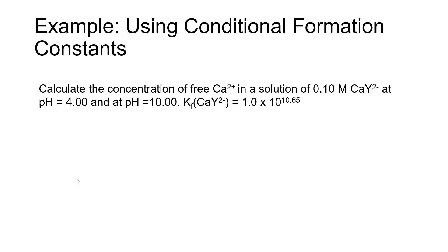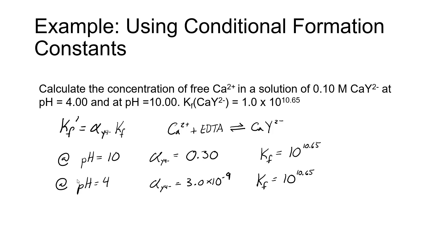Before we begin the calculation, it's always a good idea to jot down some basic pieces of information. We know that we're going to be using the conditional formation constant to find the calcium concentration, and the conditional formation constant is found by taking the alpha value for Y4 minus and multiplying it by the formation constant for calcium. The balanced chemical equation that's relevant to this problem is calcium 2 plus plus EDTA forms the calcium EDTA complex.